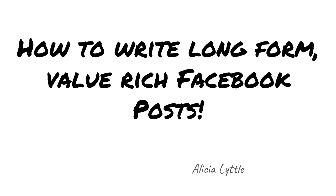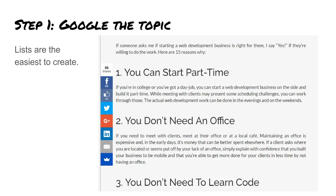So how can you write these longer-form, value-rich Facebook posts? They work for me every single time. The first thing I do is Google the topic. Lists are the easiest thing to create — things like 'seven tips to getting started' or 'three things to do today.' People really like lists because they start somewhere and end somewhere, and when you've completed reading a list you feel like you've accomplished something.